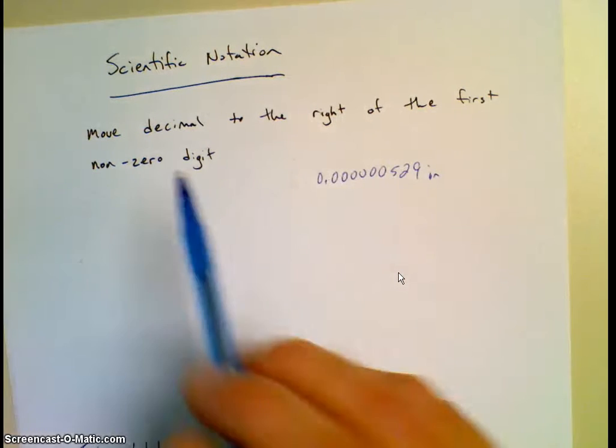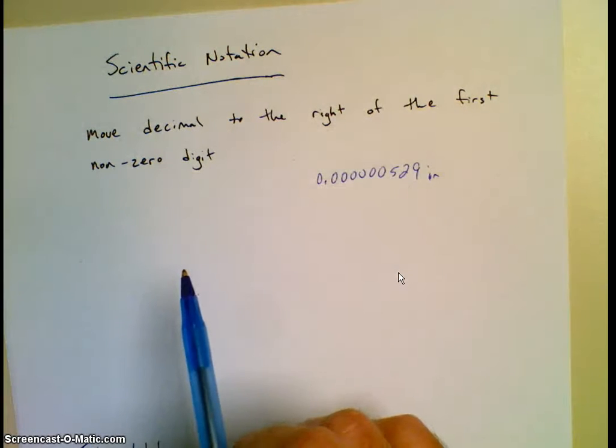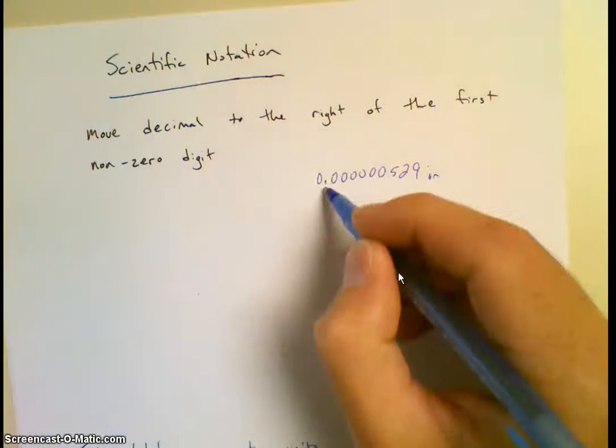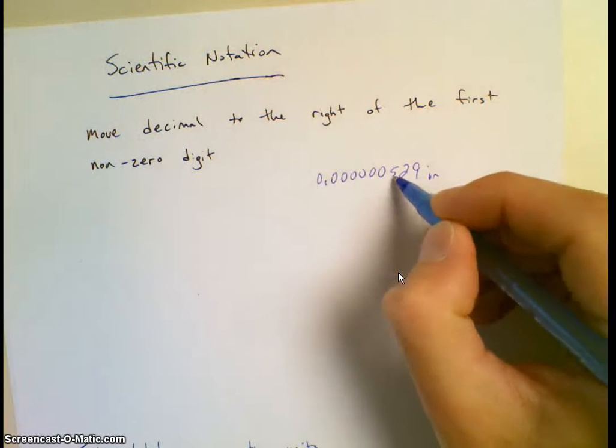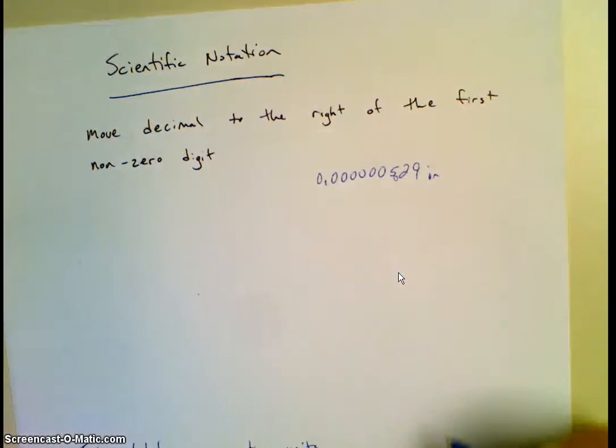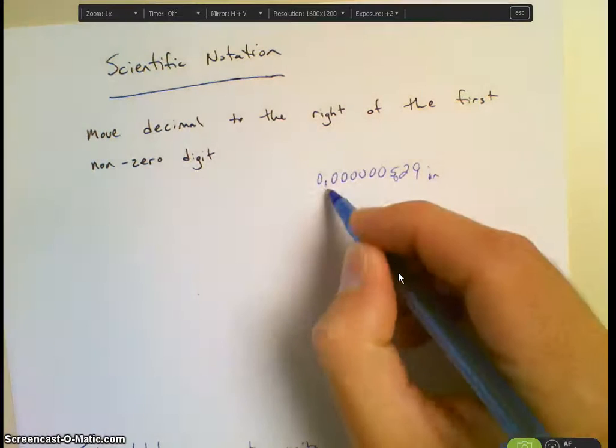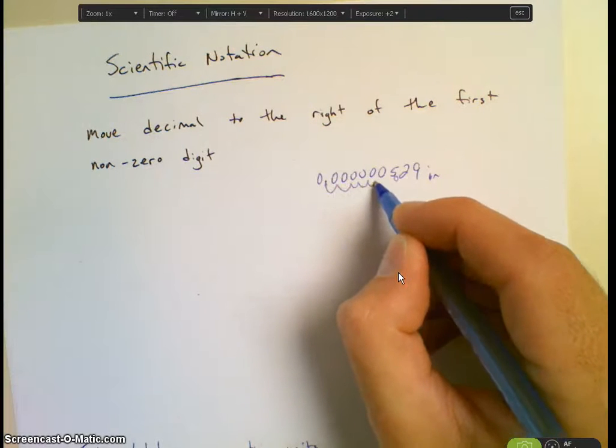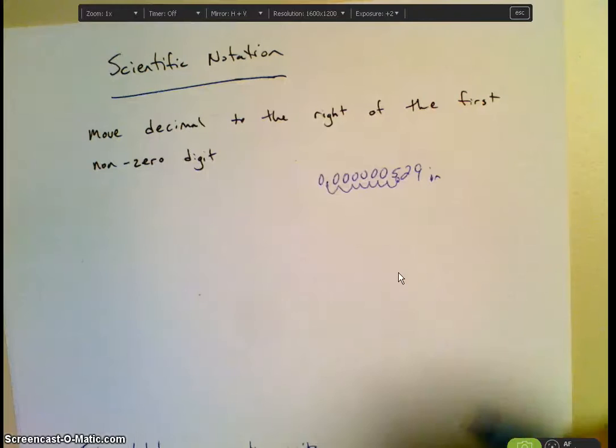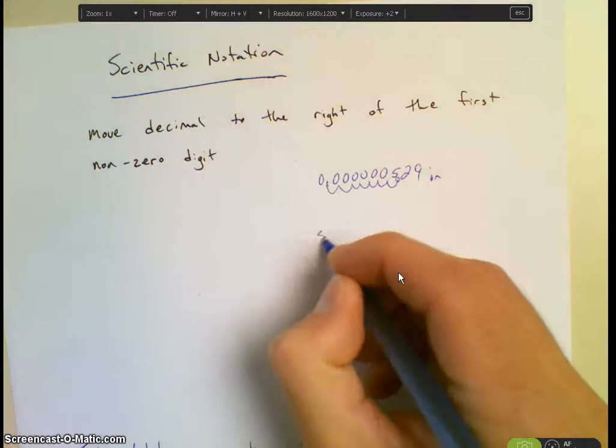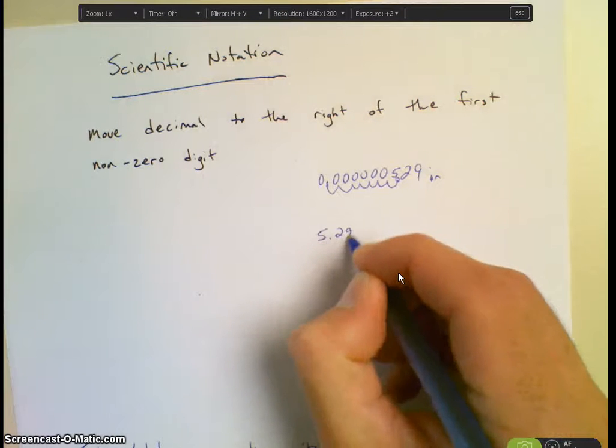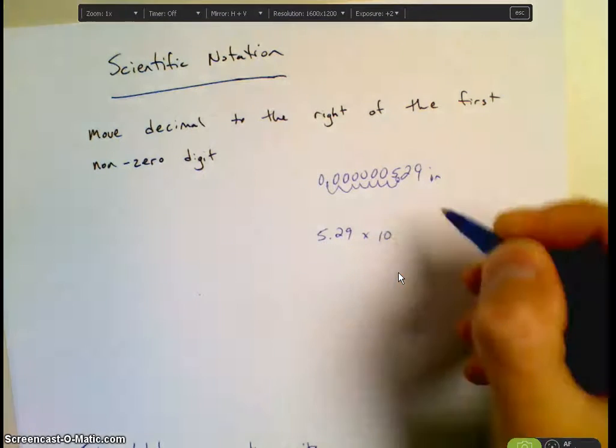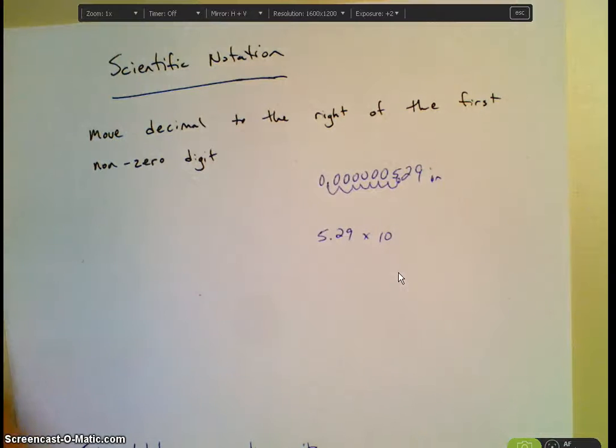And to do that, we're just going to move the decimal to the right of the first non-zero digit. So if this is our decimal and this is our first non-zero digit, we want to get it to the right of that into that position. So that's what we're going to do. We're just going to move the decimal point as we go.